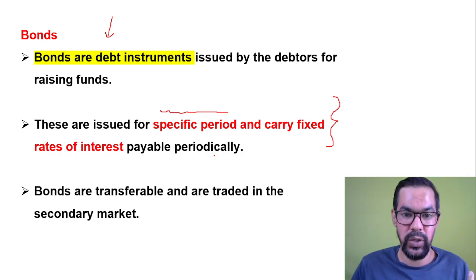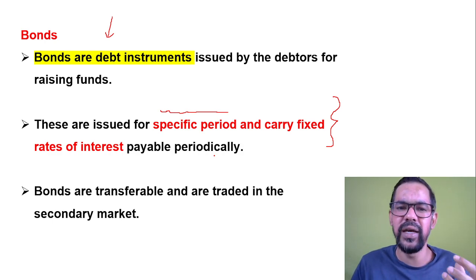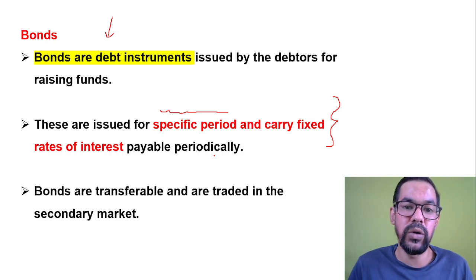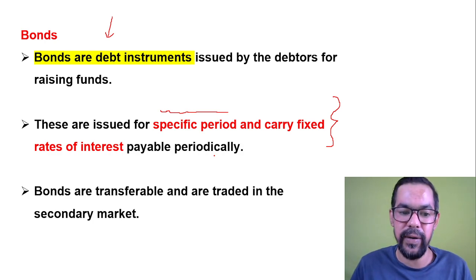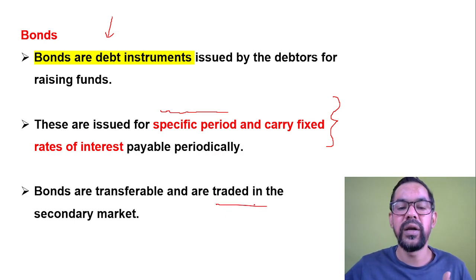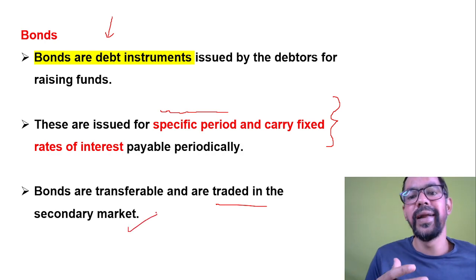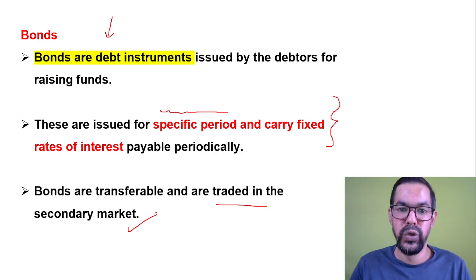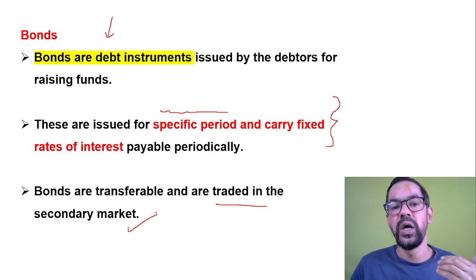Bonds are transferable in nature — you can transfer them, use them as collateral to take a loan, collateralize them as security, or use them as a margin product. Listing of bonds generally happens in the primary market, and trading happens in the secondary market. When any issuer or debtor raises funds through bonds, they list through the primary market in a process called NFO — New Fund Offer — which we discussed in previous videos.